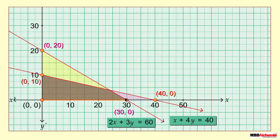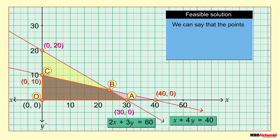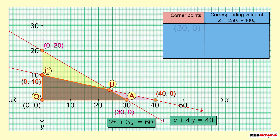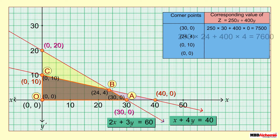The feasible region forms a quadrilateral OABC. Every point lying within or on the boundary of the feasible region OABC represents a feasible solution. The coordinates of the corner points — (30, 0), (24, 4), (0, 10), and (0, 0) — are feasible solutions. Evaluating Z at each corner point gives: 7500, 7600, 4000, and 0 respectively.